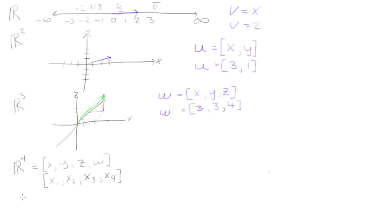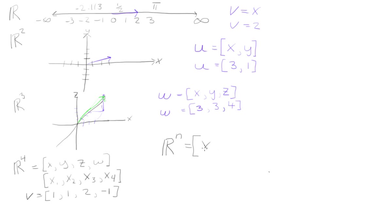Say if we wanted to pick some vector v in R4, we could say it could be (1, 1, 2, -1), and that could describe a unique vector in R4. We can go up to R10, R100, R1000 — and R1000 would have 1000 components. So in general, we'd say Rn is the set of vectors with n components: x1, x2, x3, … , xn. We have n dimensions and we'll have n components.